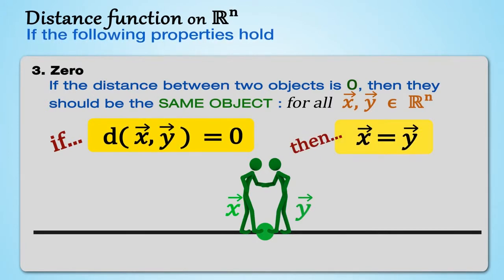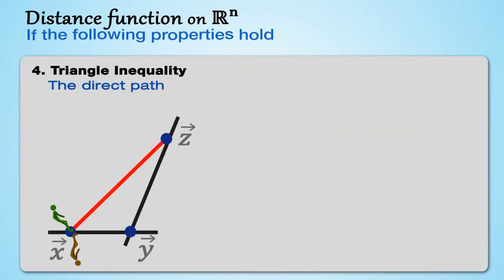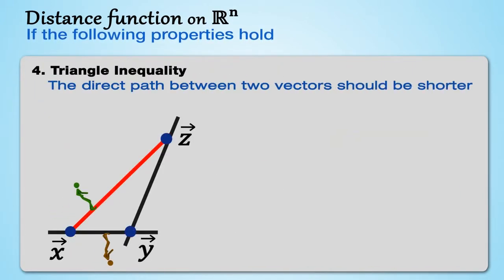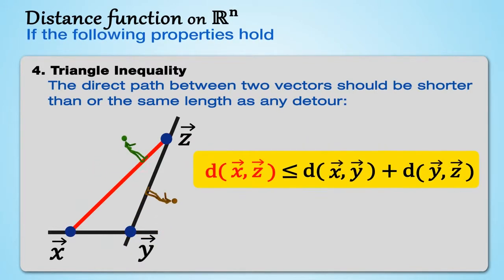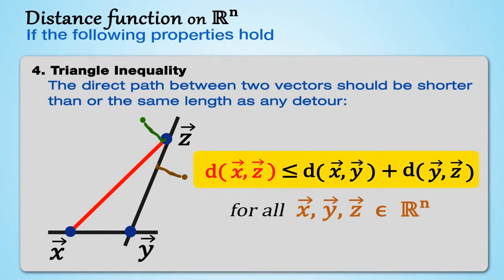The direct path between two vectors should be shorter than or the same length as any detour. d(x,z) is less than or equal to d(x,y) plus d(y,z) for all x, y, z in ℝⁿ.